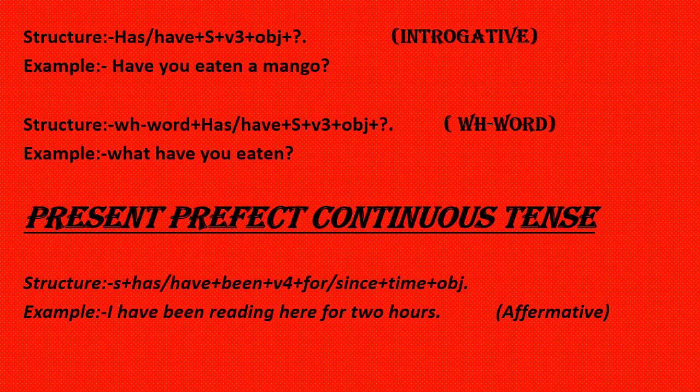Now, the Present Perfect Continuous Tense. How will the identification be? The identification is: the work has been going on for many days, many hours, or many minutes. This is the Present Perfect Continuous Tense.